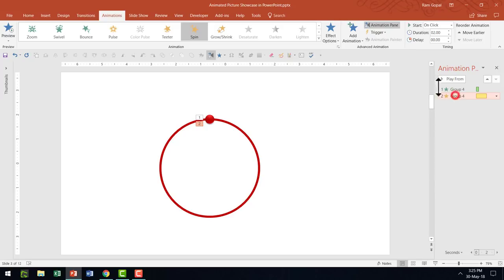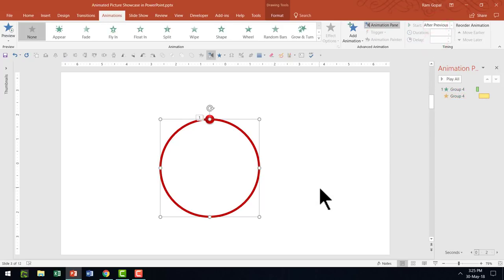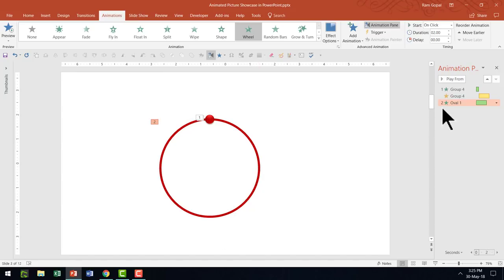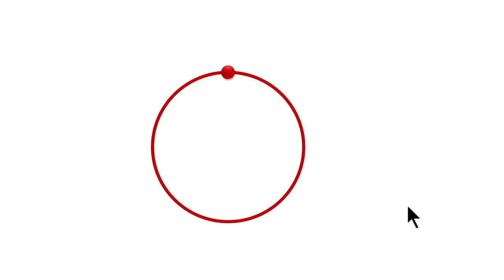I'm going to set the spin animation to After Previous. Next, I'm going to have the circle enter the scene with a Wheel entrance animation. I can see the wheel entrance animation and clicking it shows how the ring is revealed — beautiful. I'm going to have this happen With Previous. Now let's go to slideshow mode to see how both animations happen together.